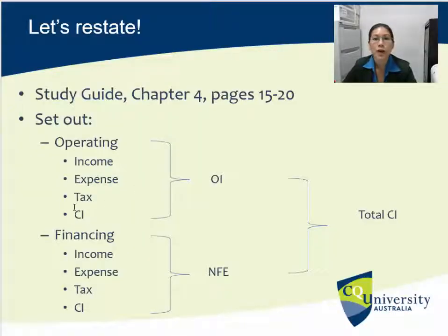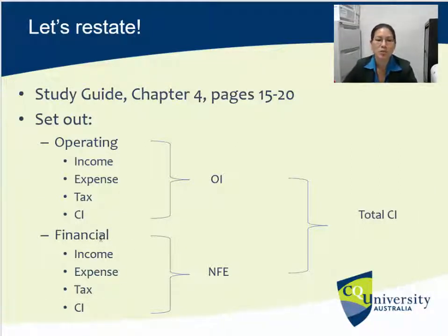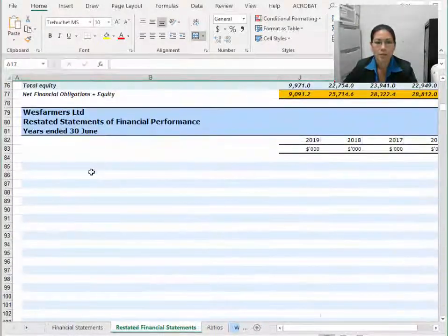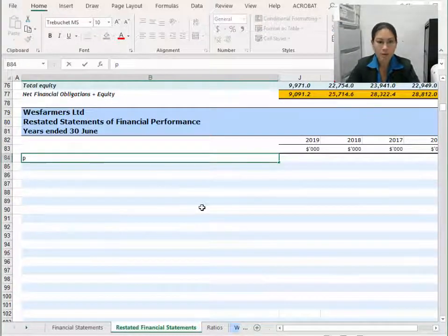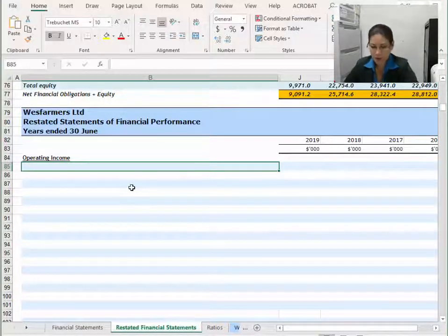Now it's just a matter of going through to restate. Going back to our structure, I'm going to start with my O section — do each of the four little categories and then get a total — then do my financial section with four little sections and also get a total, then sum those two totals and do a check back to my original total CI. My heading is simply going to be operating income. So go to my restated income statements — the first heading I'm going to put in is operating income.